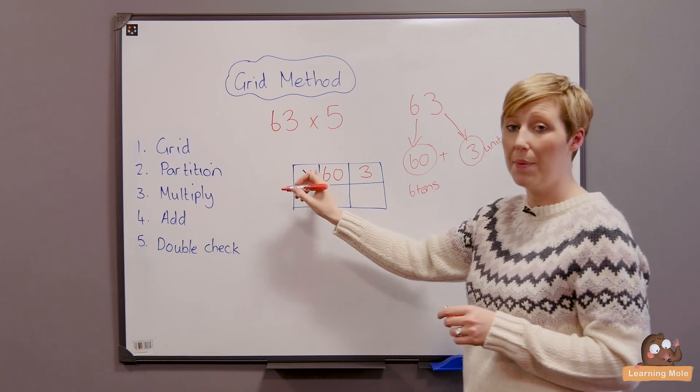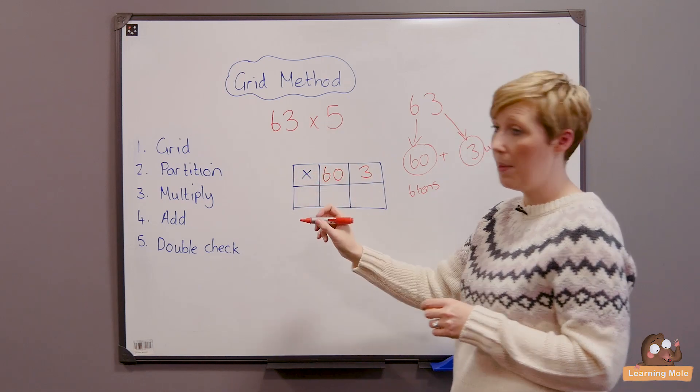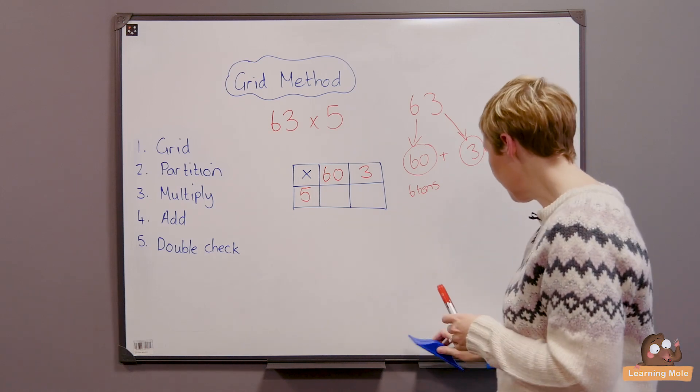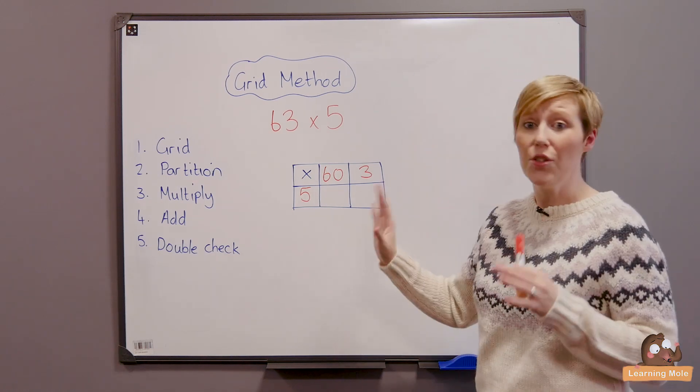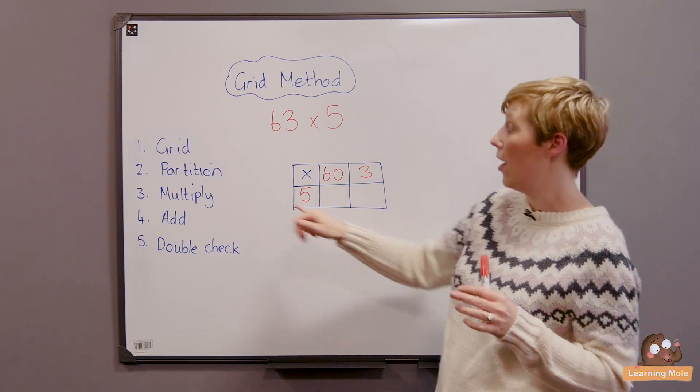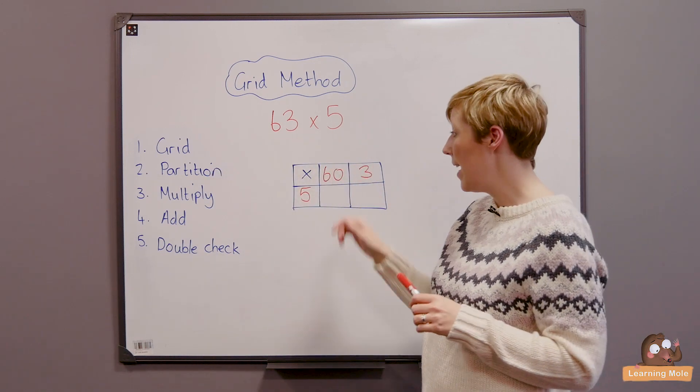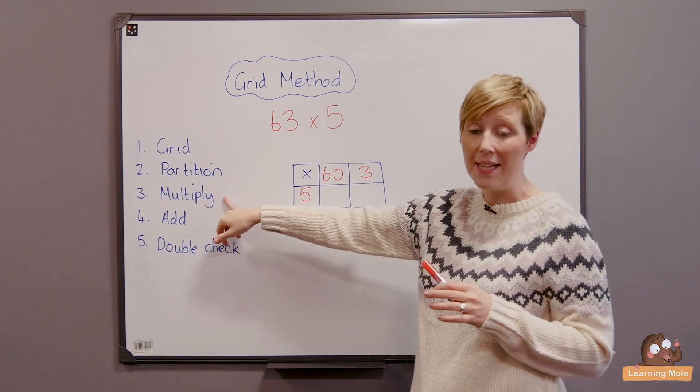And you've got your multiplication here sign. So what are you multiplying by? You're multiplying by 5 and that's basically your grid set up on there. So as you can see the grid is entirely set up. You've drawn the grid, you've partitioned the number into your 60 and your 3 and you've filled your grid. So now you're ready to multiply.